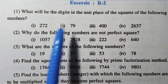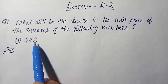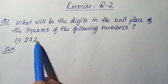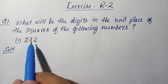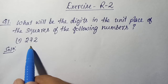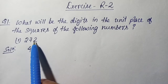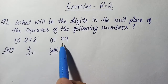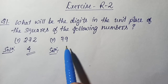Let's solve question number one, sub-number one. The first number is 272. Here the unit digit is 2. If you make a square, you get 2 into 2 = 4. It means if you make a square of this number, the unit digit of that result will be 4. We only need to write the unit digit, so the answer is 4.